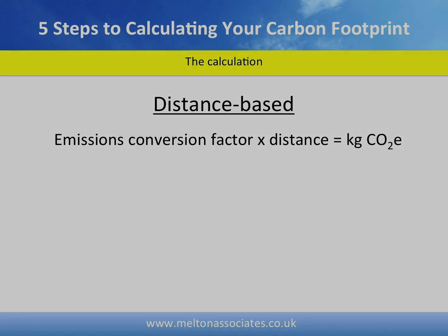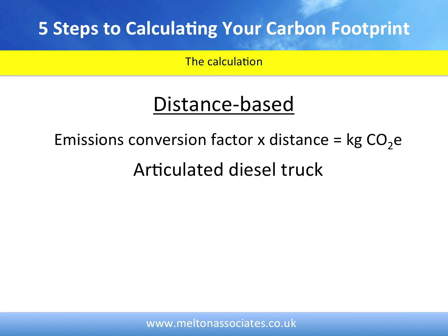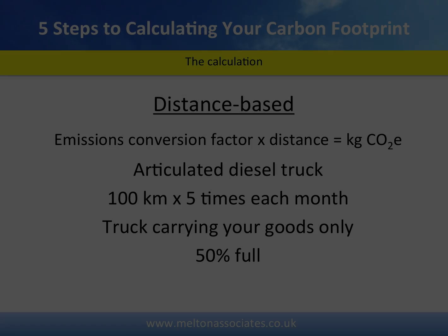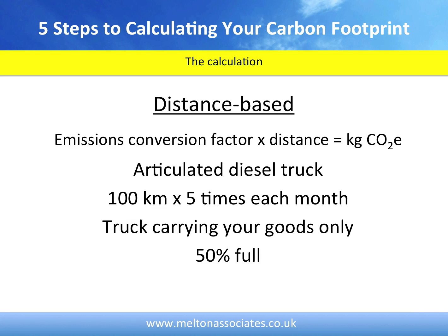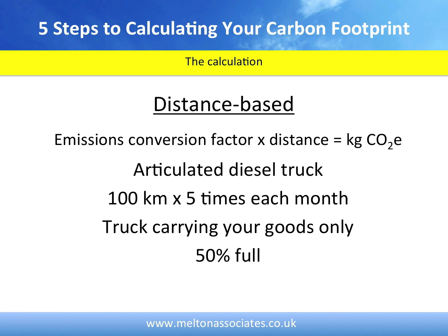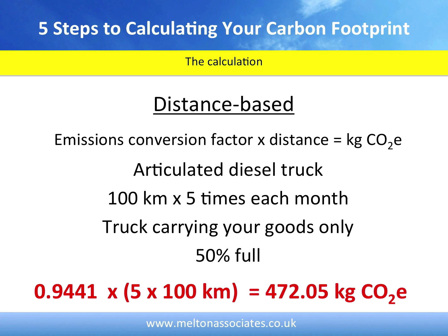Therefore, let's do an example using the following information: an articulated diesel truck moving freight 100 kilometres five times each month; the truck is only carrying your goods; and the truck is 50% full. Looking at the DEC-DEFRA tables and at the worksheet labelled Delivery Vehicles, we see the emission conversion factor for a diesel-powered articulated truck with a 50% load is 0.9441 kilograms of CO2e per kilometre. Therefore, the calculation we use to work out the emissions for the distance estimated over the month is 0.9441 multiplied by 5 times 100 kilometres, which equals 472.05 kilograms of CO2 equivalent emissions.